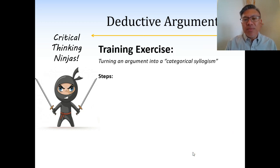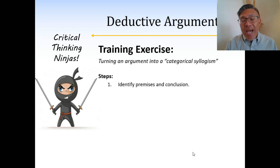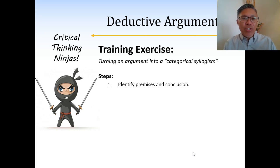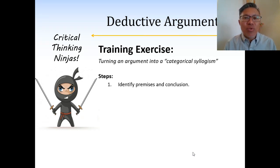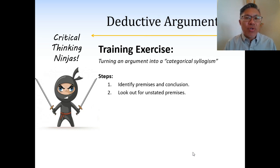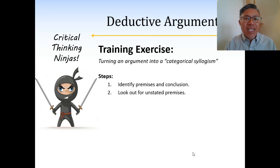We want to first make the argument into a format referred to as a categorical syllogism. To do that, we need to understand how the argument works — figure out what the conclusion is, what's the main point the speaker is trying to get across, and what claims are being used to support it. In other words, what are the premises and what is the conclusion they lead us to believe? Watch out for unstated premises — reasons so obvious the speaker neglects to state them.